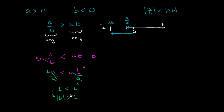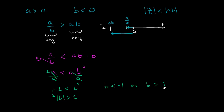Well, just think about this: if you square something and the result is greater than 1, that means either b is less than negative 1. Because if it was negative 1 and you squared it, you would get exactly 1. If it was greater than negative 1 — say negative 0.99 — then when you square it, you'd get something less than 1, so that doesn't work. So b has to be less than negative 1, or b has to be greater than 1 for the same exact logic.